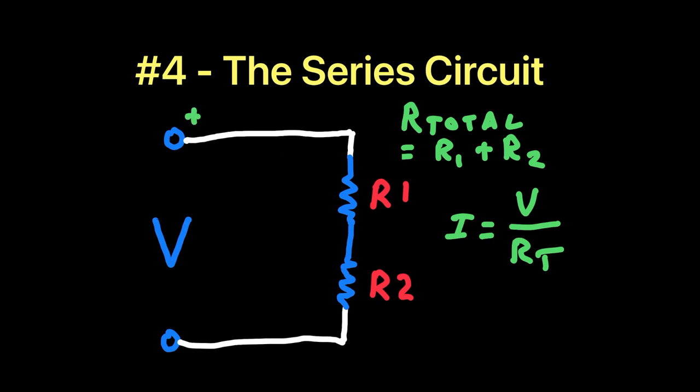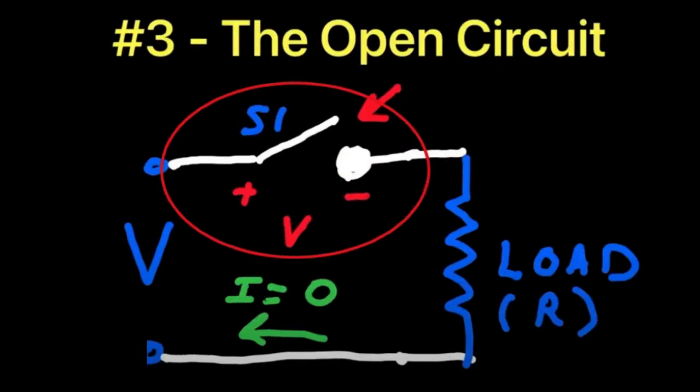The voltage source is distributed among the loads in a way that is dependent on the resistance value. The highest resistance will have the highest voltage across it. This is very important to remember. Just like with the open circuit discussed previously, the open switch, which had infinite resistance, had all the voltage appearing across it.